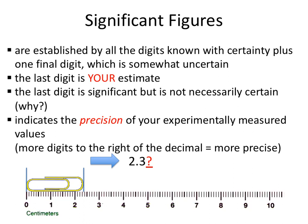Now we're going to talk about significant figures, which we'll be covering for a couple of class periods — this is something that's not going to go away, so we need to be very comfortable with it. Significant figures are established by the piece of equipment you're using. Basically, significant figures are all the digits that you know with certainty plus an additional final digit that is somewhat uncertain. This last uncertain digit is dictated by your estimation, and your estimation might be slightly different from your lab partner's — so there's a degree of uncertainty in that last digit.